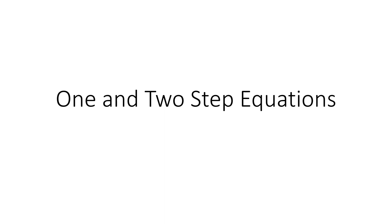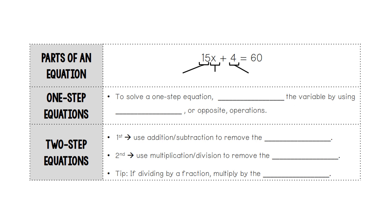This additional video is on how to solve one and two-step equations. On the parts of an equation, the number in front of a variable is called the coefficient. The letter — any letter that is used — is called a variable. And the number that is by itself is called the constant.